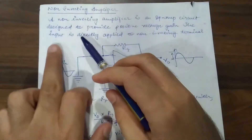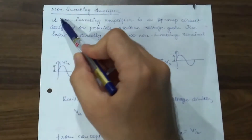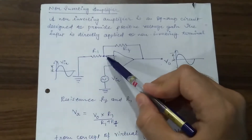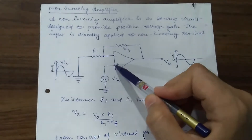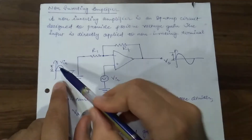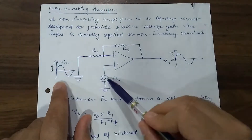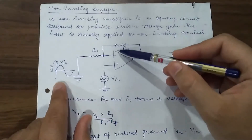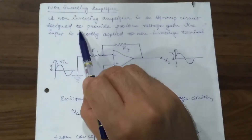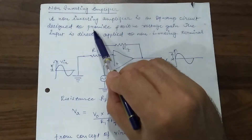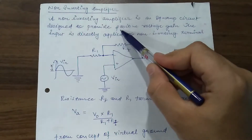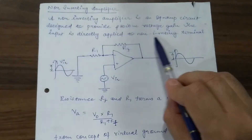Welcome to the lecture series on analog electronics. Today we are going to learn about the non-inverting amplifier. A non-inverting amplifier means we are providing input to the operational amplifier on the non-inverting terminal. It will amplify the input wave but will not invert the output. A non-inverting amplifier is an op-amp circuit designed to provide positive voltage gain.